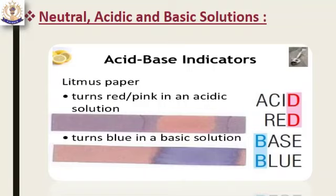Neutral solutions have equal H⁺ and OH⁻ concentrations, so their molar concentration will be equal to 1×10⁻⁷ at 25°C. Acidic solutions have greater H⁺ than OH⁻, so the molar concentration of H⁺ will be greater than 1×10⁻⁷ at 25°C. Similarly, basic solutions have greater OH⁻ than H⁺, so the molar concentration of OH⁻ will be greater than 1×10⁻⁷ at 25°C.